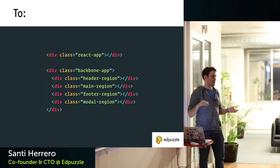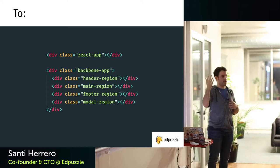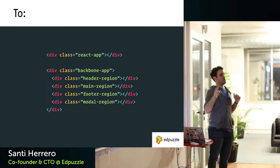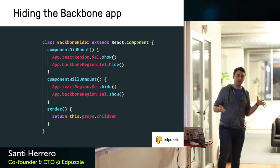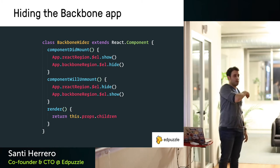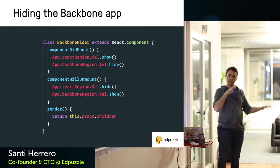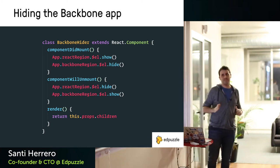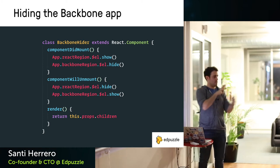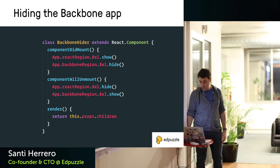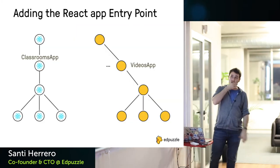This gives a hint: whenever the React page has to show, the Backbone one has to hide. You can do this imperatively, or you can use React's declarative nature and create a component — a 'Backbone Hider' — that wraps the whole React application. Every time this component is rendered it hides the Backbone one; every time it unmounts it shows it again. With only two frameworks, this works simply — the user does not see any flicker at all.